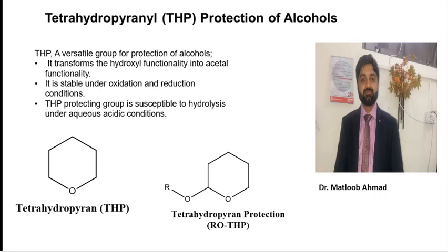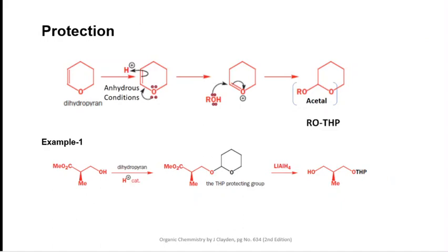So once we have carried out our chemoselective reaction, we could easily deprotect this THP by using aqueous acidic conditions. Here is the procedure: how could we carry out the protection by tetrahydropyran by using dihydropyran as a starting material. This route is a very effective and convenient route for the protection of alcohols by THP.